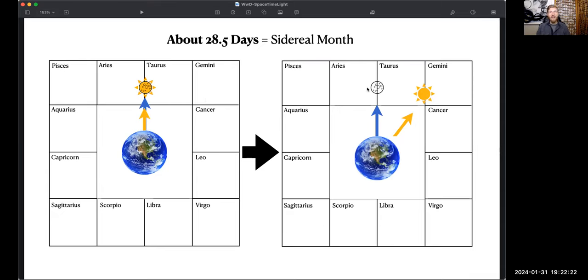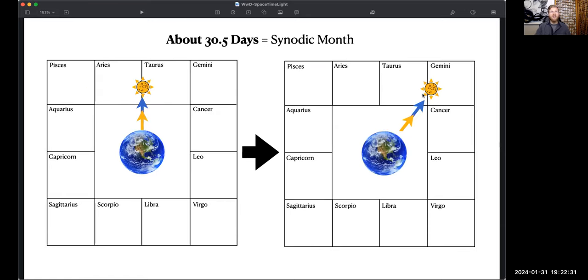The sidereal month, like we said, is that moon going 360 degrees, has nothing to do with the sun, purely a lunar measurement. This is our synodic month where both moon and sun make it all the way around, or sorry, moon makes it all the way around plus one sign, sun makes it through one sign. And this is where